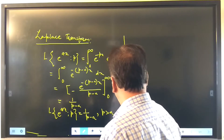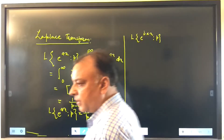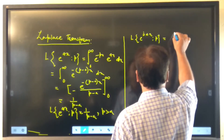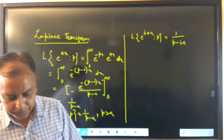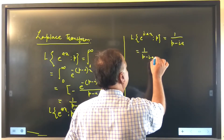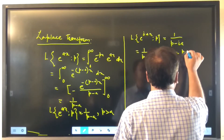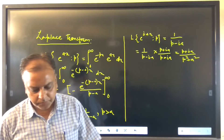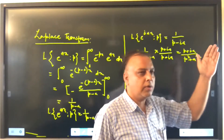Now we find the Laplace transform of e^(iax) with respect to parameter p. Proceeding in the same way and using the previous result with a replaced by iota a, we get 1/(p - ia). Multiplying numerator and denominator by (p + ia), we get (p + ia)/(p² + a²). So the Laplace transform of e^(iax) equals (p + ia)/(p² + a²).